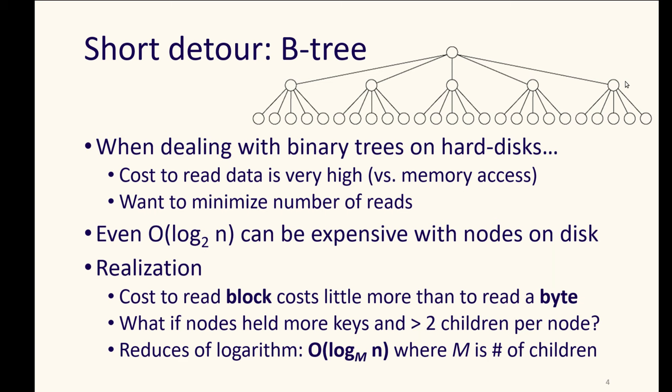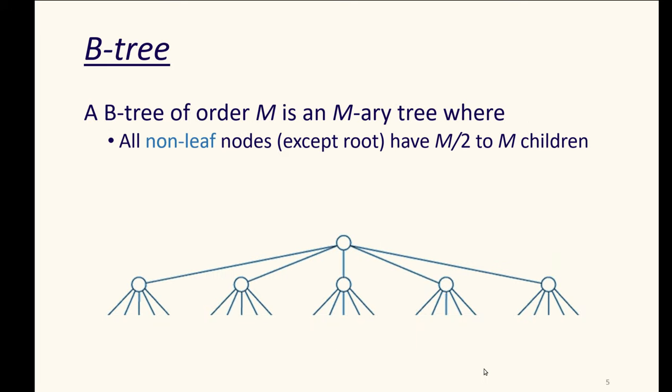So if we had more than two children for a particular node, if we had M children, then we would be doing things in log base M of N time, which could be better than log base 2 of N. So a B tree is a general concept of having some order M where it is an M-ary tree. So if we have the possibility of 10 children, then we could have 10 could be our M and so on.